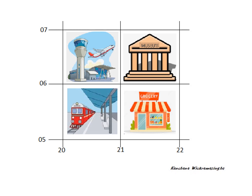Let's practice further. Look at this grid with four interesting places. Can you work out the four-figure grid references going by the fundamentals? Just give me the four-figure grid reference of the airport — that is 2006, and that of the museum is 2106. What did you get for the railway station? Is it 2005? You're correct. And the four-figure grid reference of the grocery is 2105.